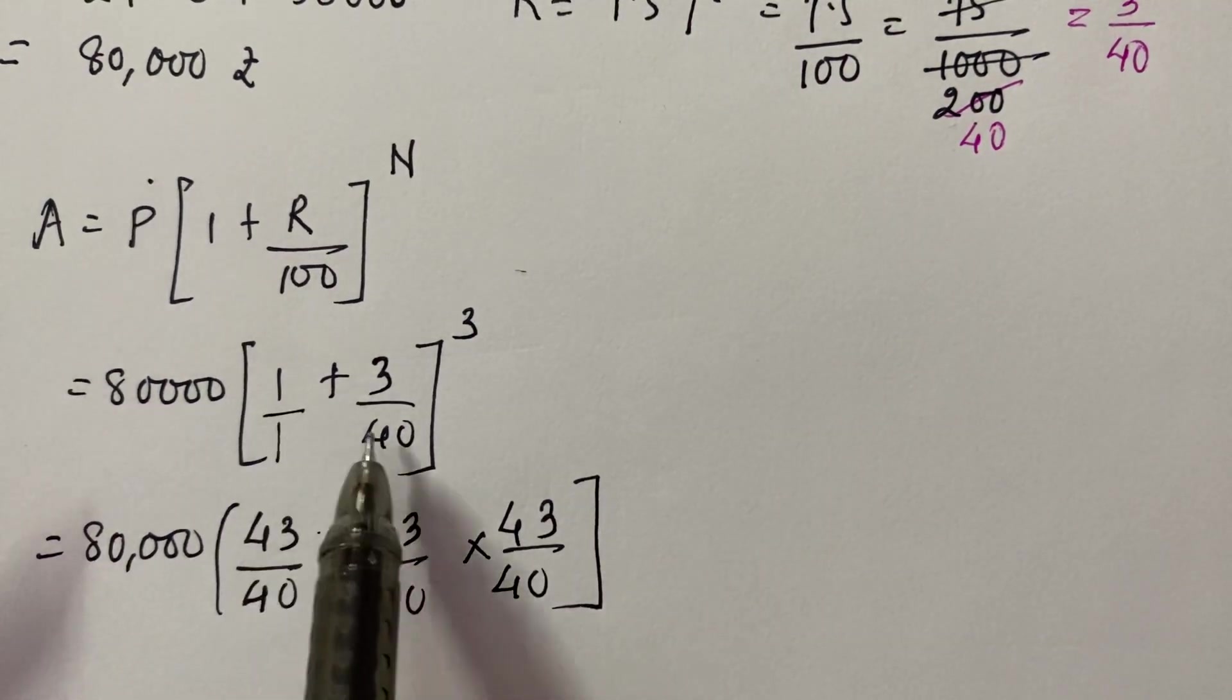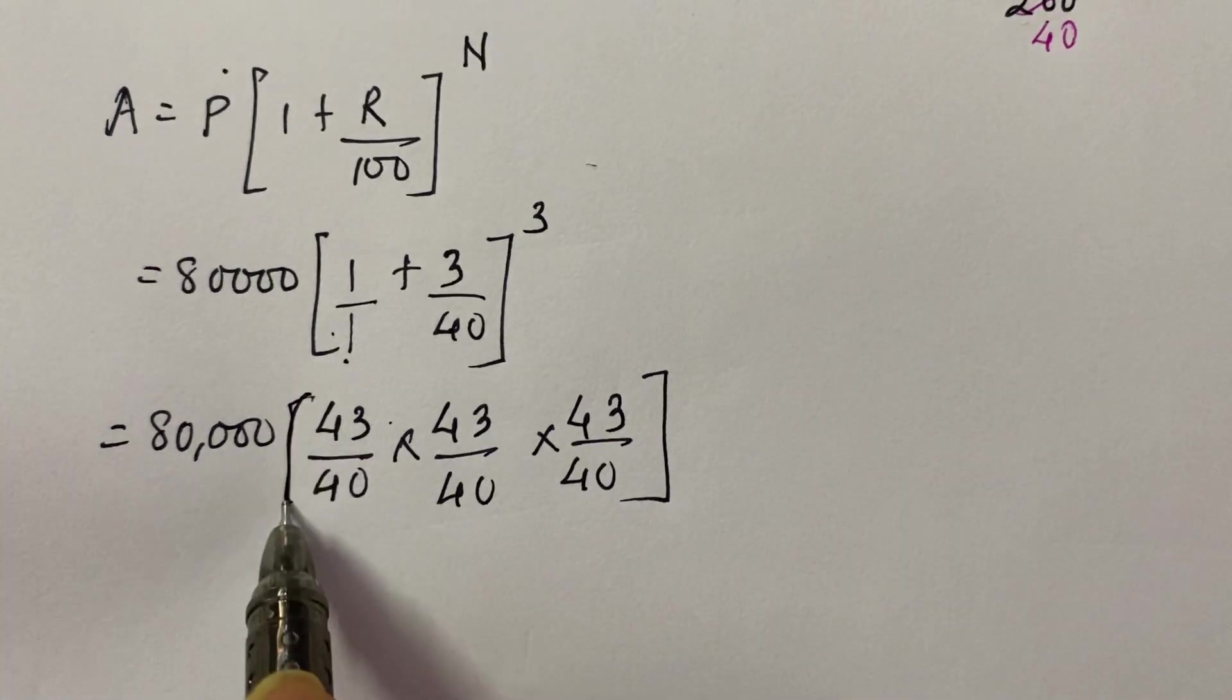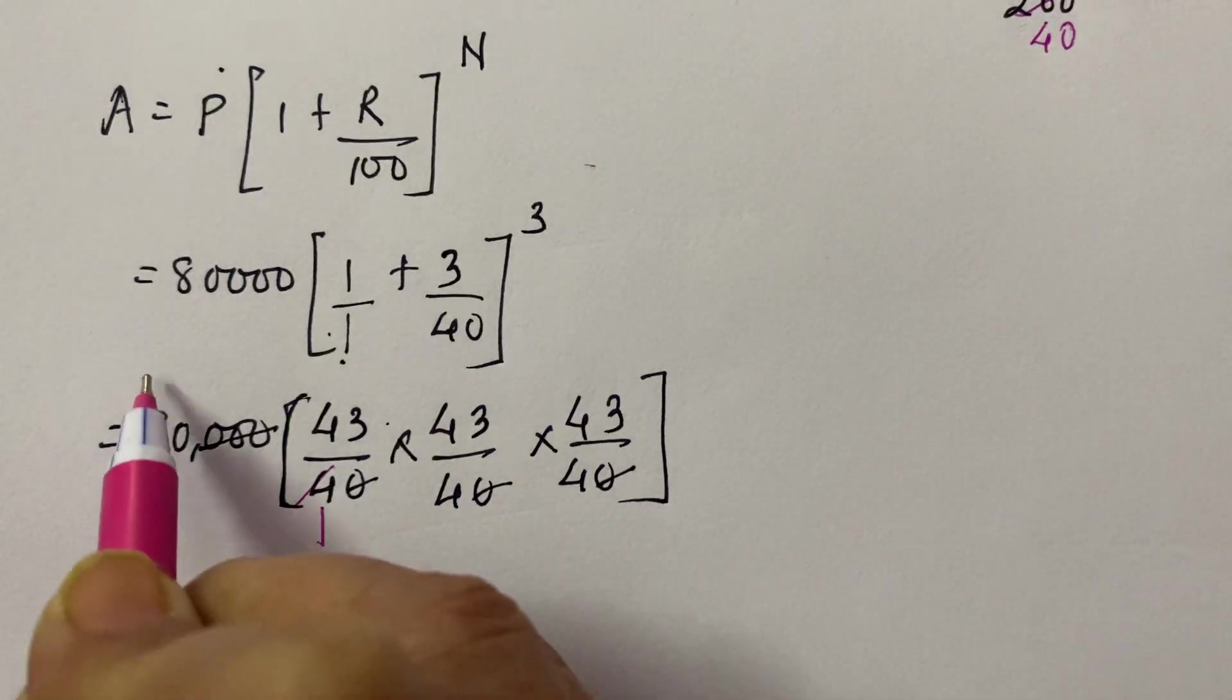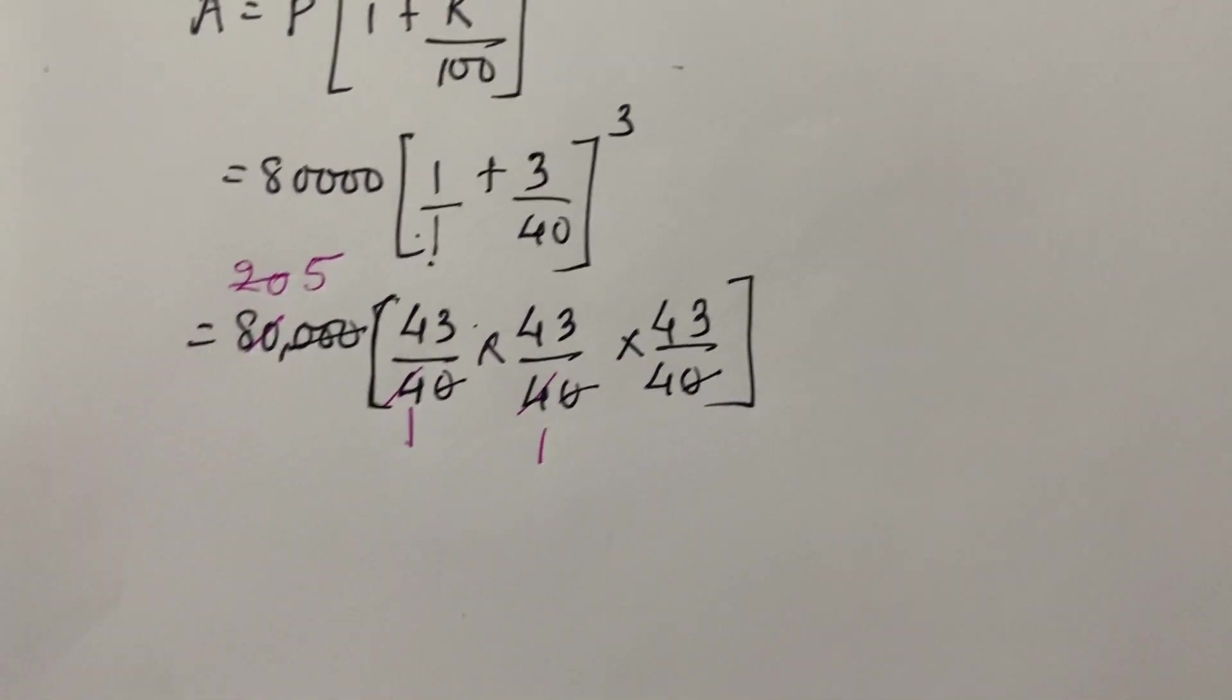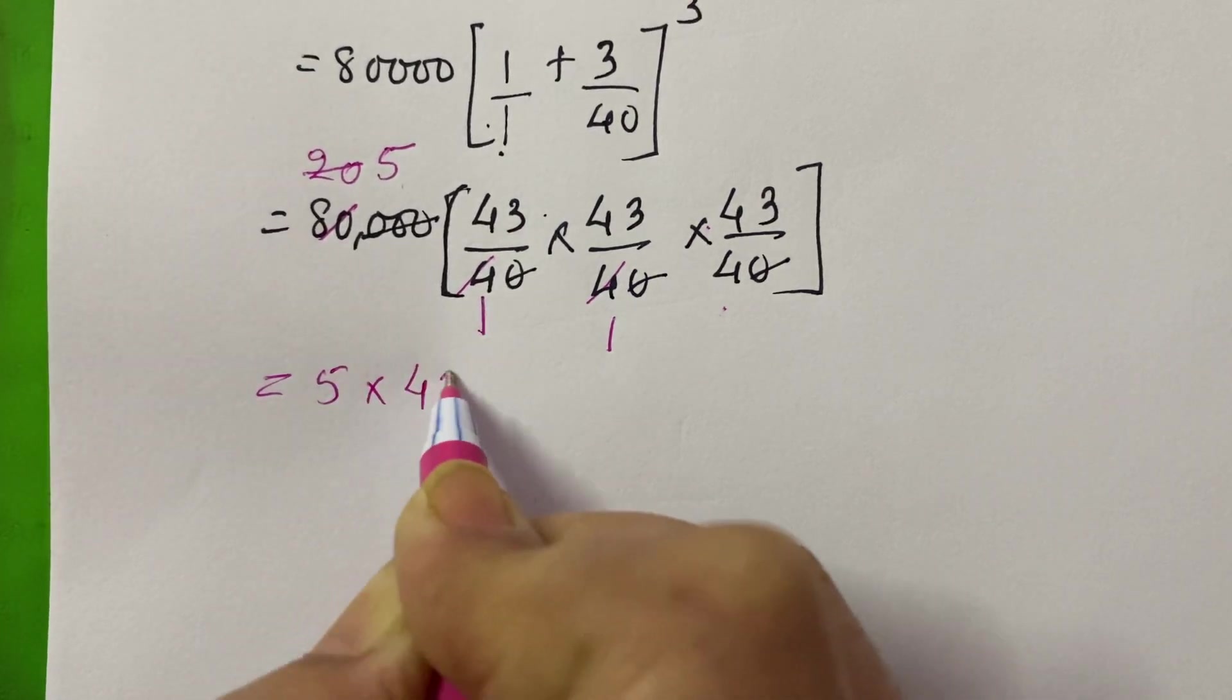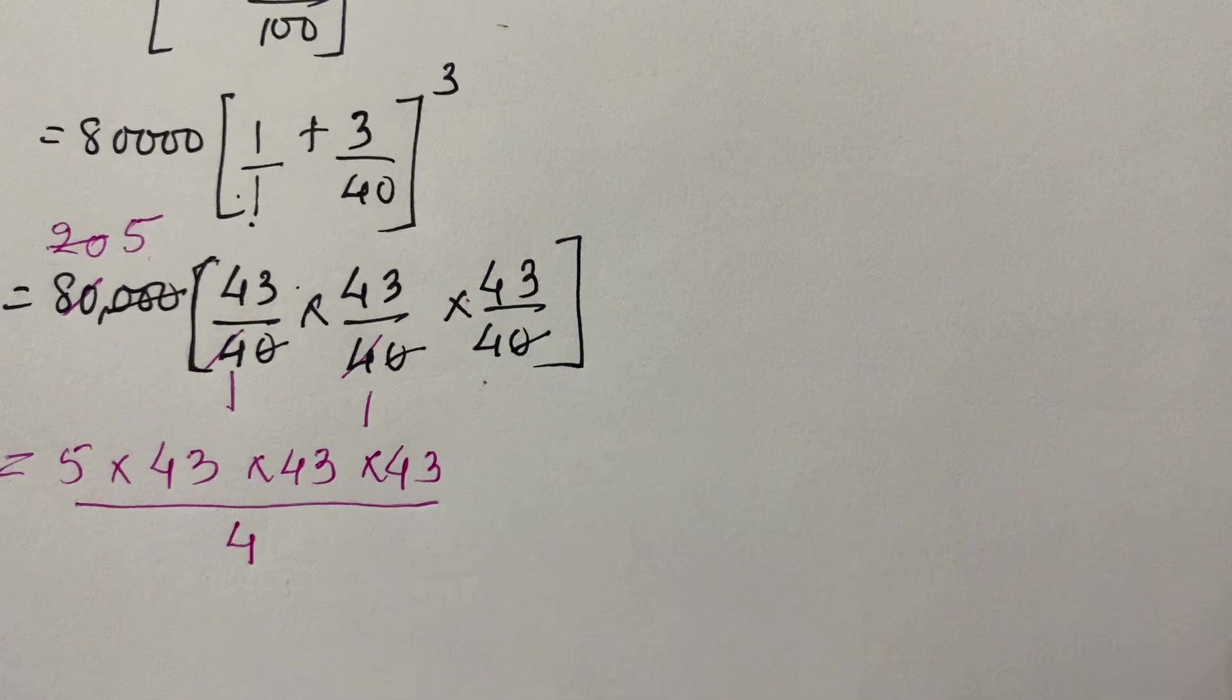If you do cross multiplication, you have 1 in the denominator, 40. 1 times 40, and plus 3, that makes 43 upon 40. How many times? 3 times. So, we have written it thrice. Now your 3 zeros cancel out with these 3 zeros. Then, 4 ones, 4 twenties. Then 4 ones, 4 fives. Now cancellation doesn't happen. Now you have to directly multiply 5 by 43 three times, and then divide by 4.